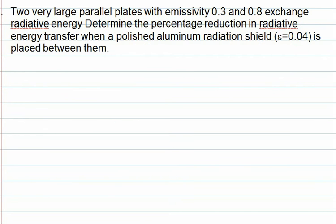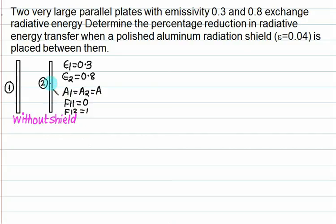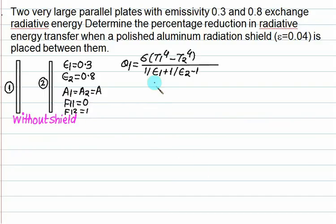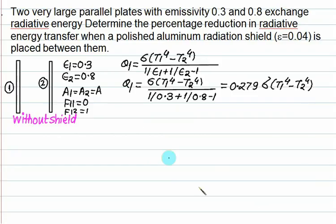Two very large parallel plates with emissivities of 0.3 and 0.8 exchange radiative heat. Determine the percentage reduction when a radiation shield is introduced. T1 and T2 are constant but unspecified, so all values will be in terms of T1 and T2. With epsilon_1 = 0.3, epsilon_2 = 0.8, F12 = 1, using the parallel plate formula, Q1 = 0.279 × sigma × (T1^4 - T2^4) × A. This is the heat transfer without a shield.